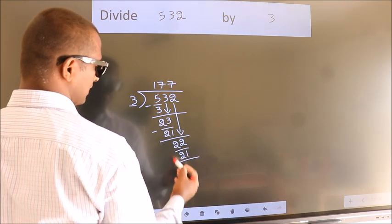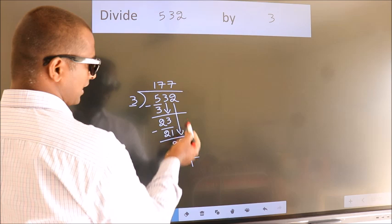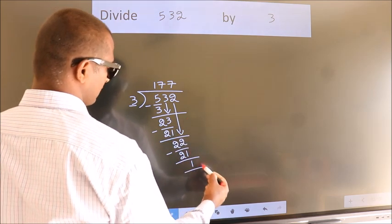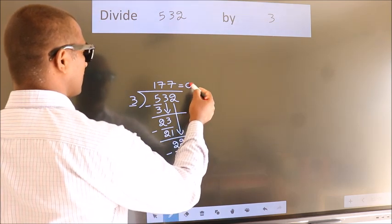Now, we subtract. We get 1. No more numbers to bring it down. So, we stop here. This is our remainder. This is our quotient.